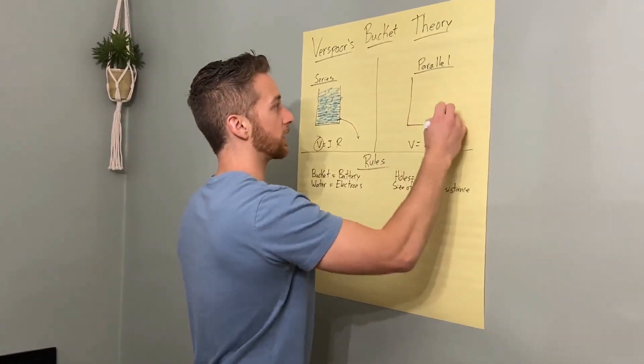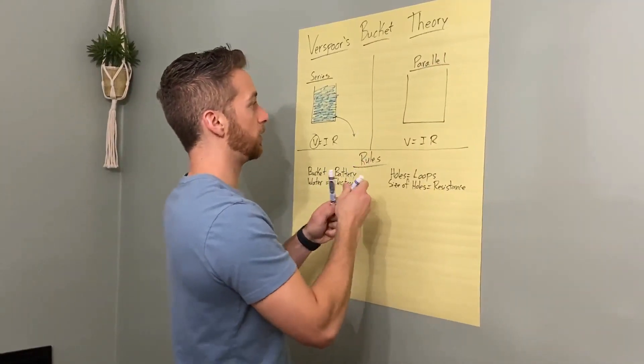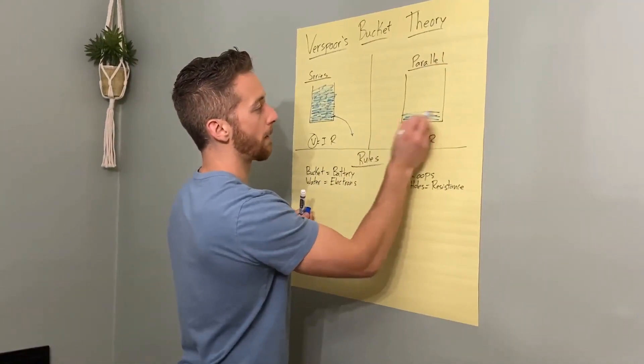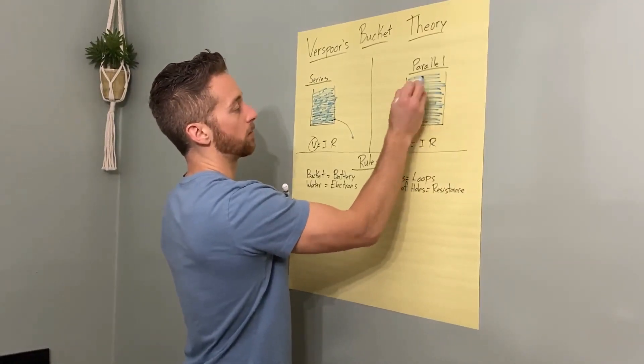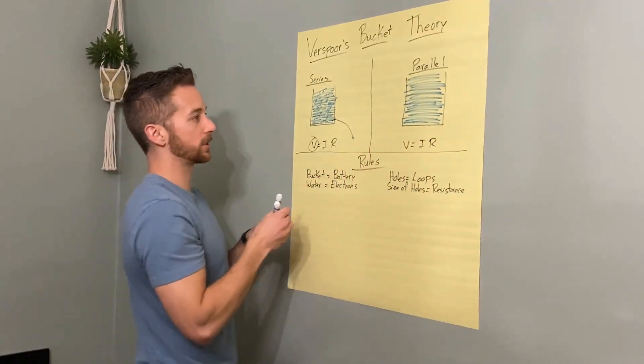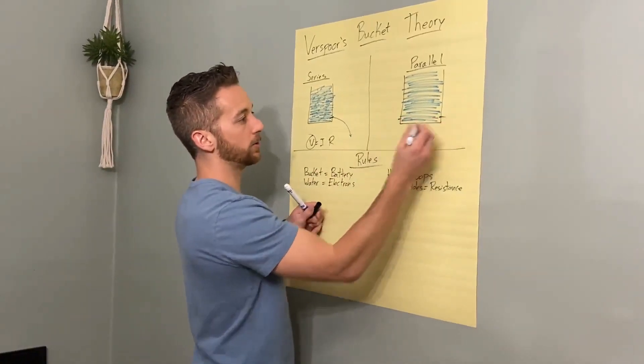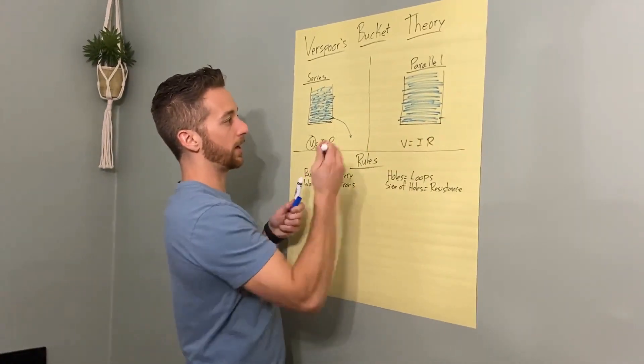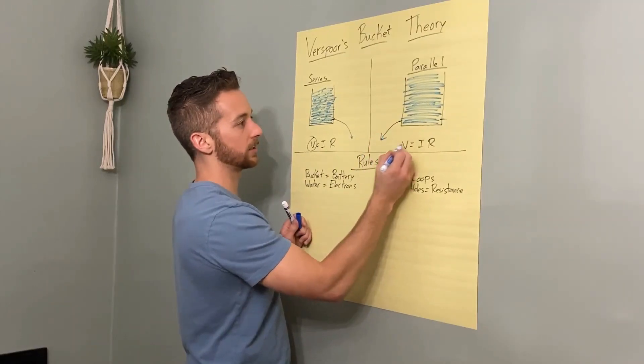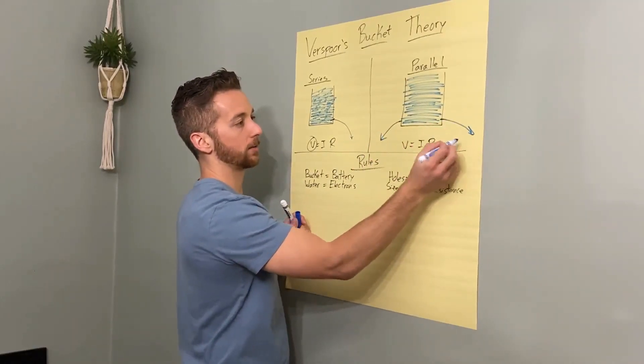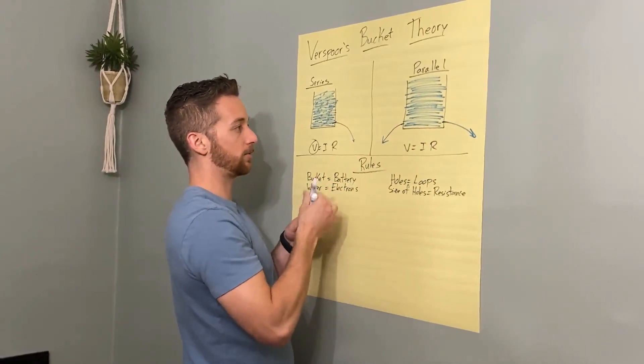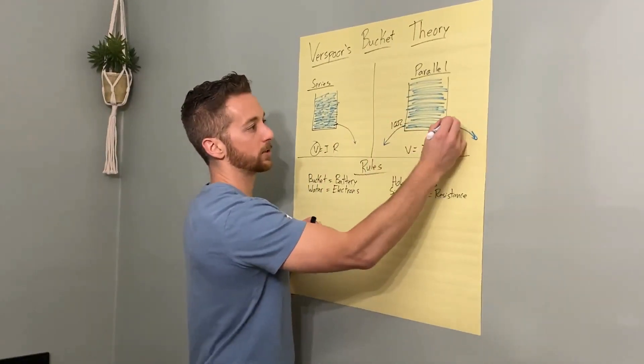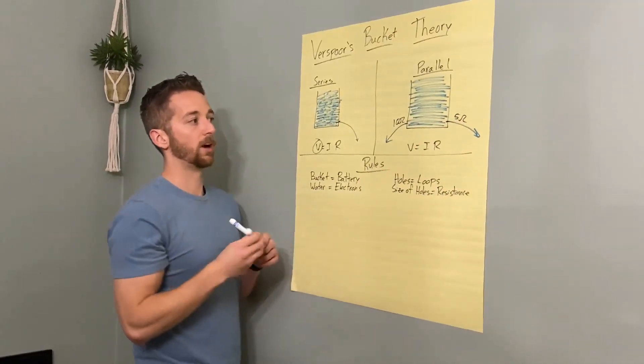In a parallel circuit, similar start, we will still fill our bucket up with water. But the tricky part here is as we punch holes in the side, now we have one, two holes in it. So now we have one path with some resistance, and now we have another path. Both have a resistance, both have a positive resistance. Let's give them numbers here. Let's say this one is 10 ohms and this one is 5 ohms, right?